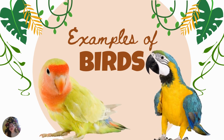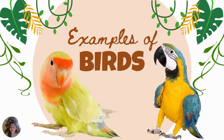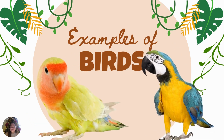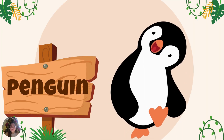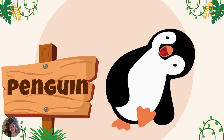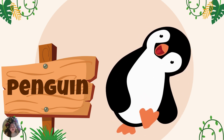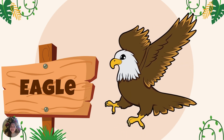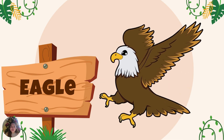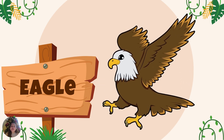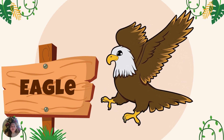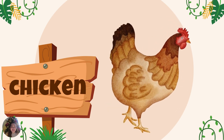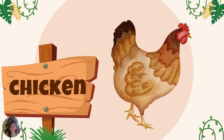I have here some examples of birds. All of them have wings to fly and beaks to get food. We have penguin — penguin is a kind of bird that cannot fly, just like the ostrich. And of course, chicken is also a kind of bird.